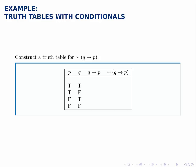In this example, we'll build a truth table for a conditional statement. Specifically, we're told to construct a truth table for the statement not Q implies P, where Q implies P is in parentheses.